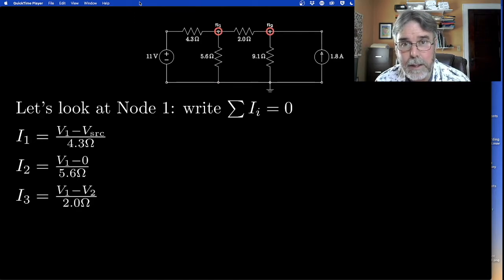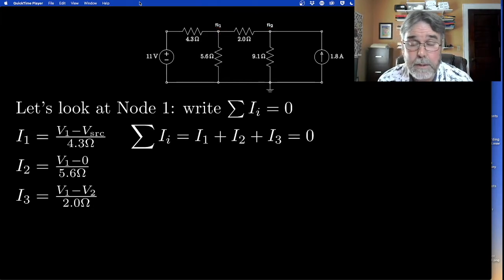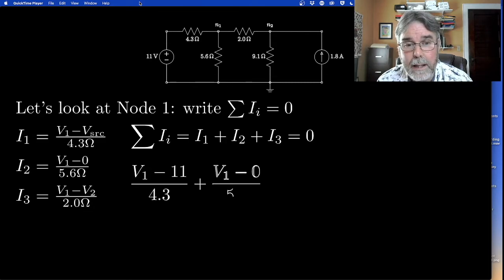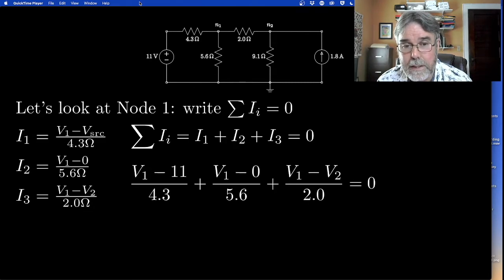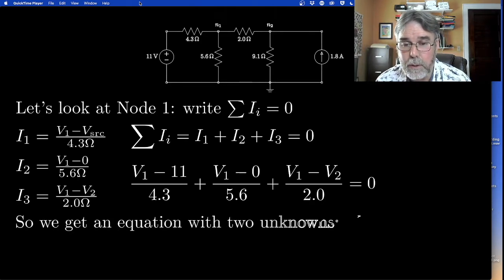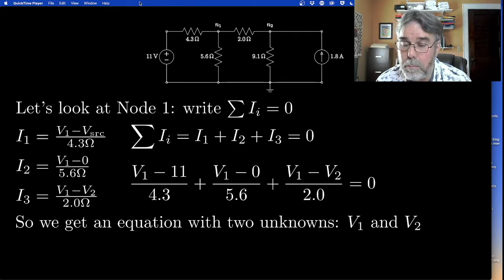Finally, let's think about the current leaving node one heading toward node two. That's going to be equal to the voltage at node one minus the voltage at node two, the delta V, divided by the resistance of the branch, 2 ohms. Now all I have to do is write out that the sum of those three currents has to be zero, and I get an equation. That's the result of applying nodal analysis to node one. Notice that this equation is a single equation with two unknowns, V1 and V2.